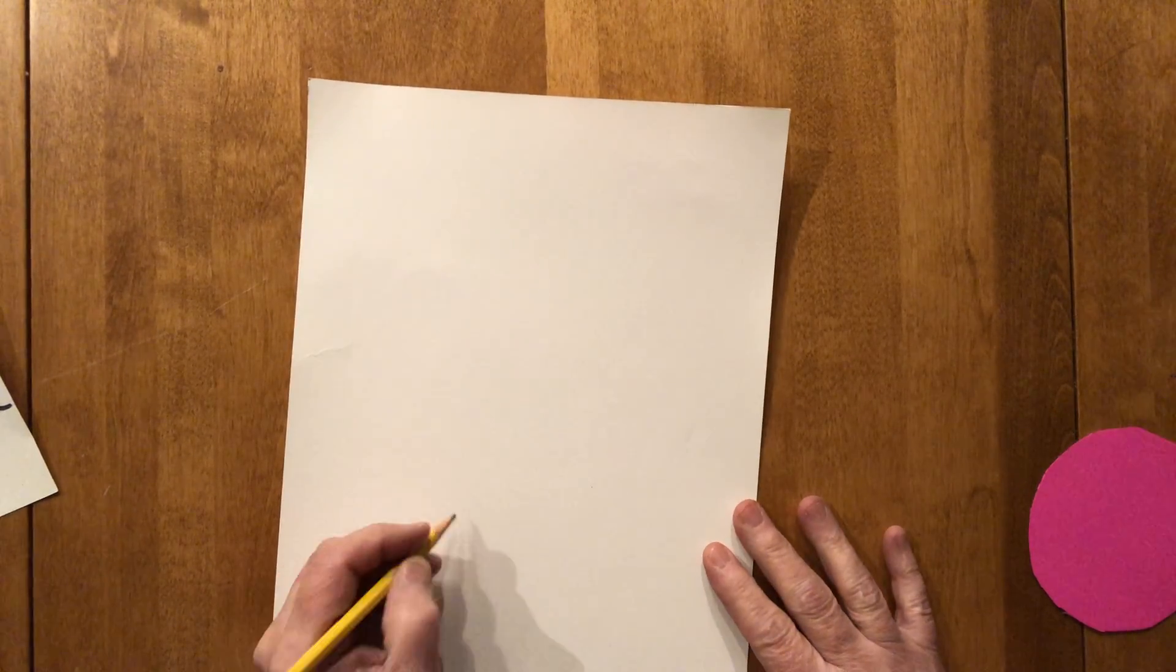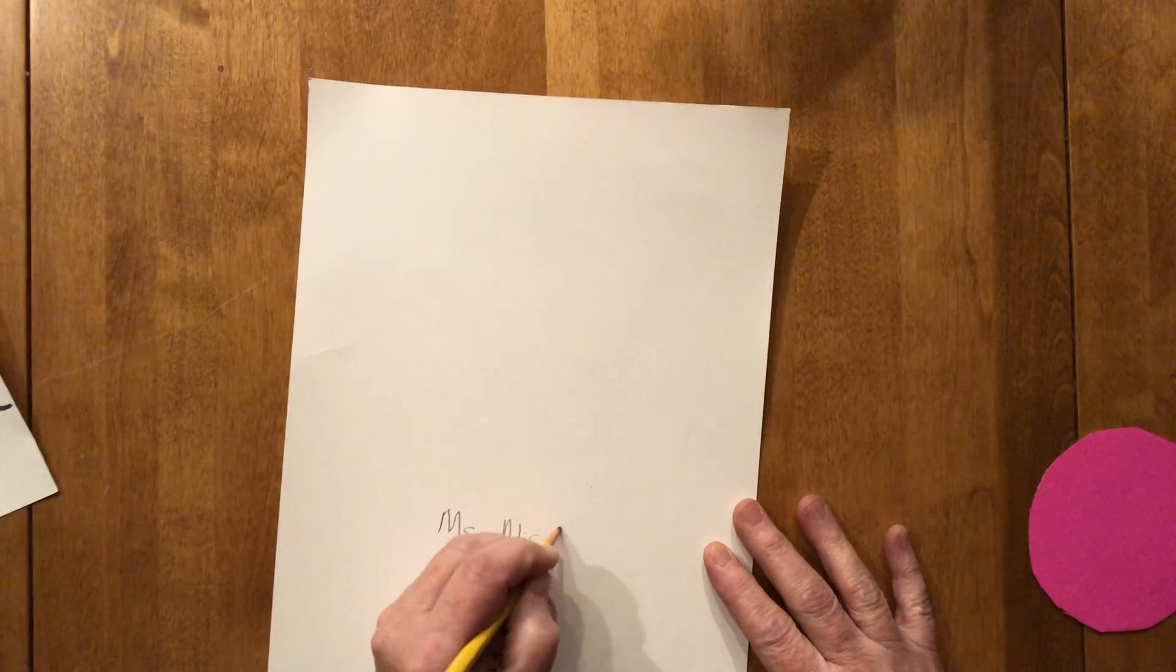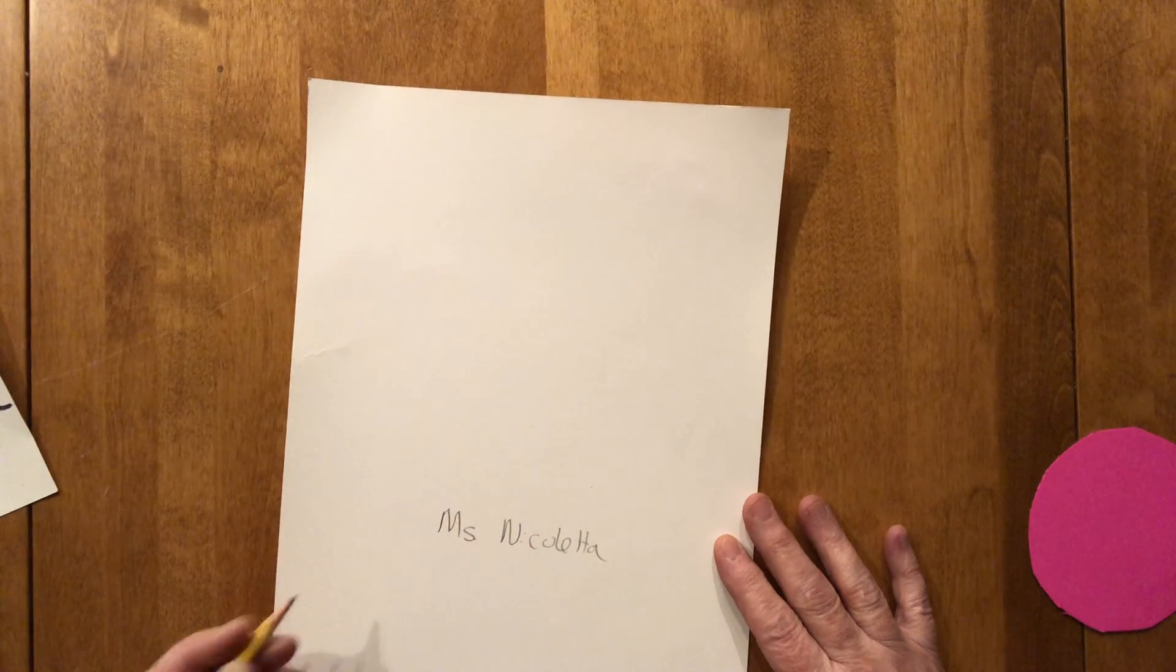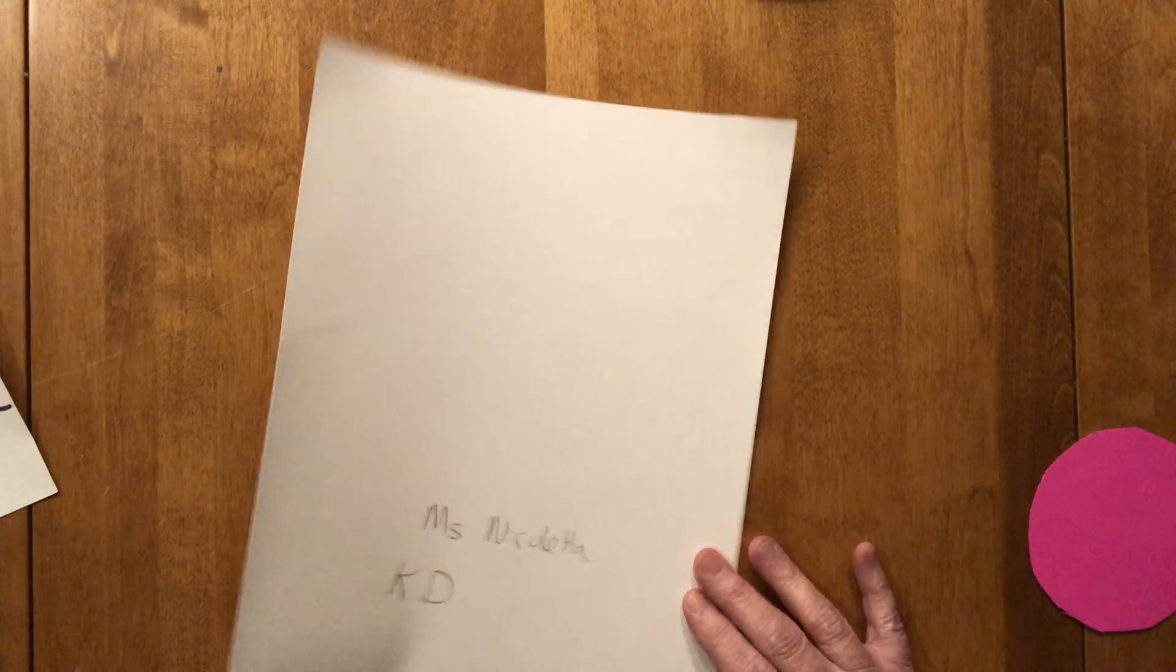Okay, so to make it our first step is what it always is and we're going to write our name and our class code on the back. So write your name and your class code and then turn your paper over.